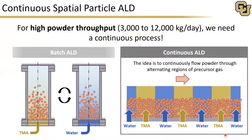In contrast to batch temporal ALD, where we load our powder into the chamber, perform a series of reactions, and then remove that powder, we can remove some of this dwell time by continuously flowing powder through alternating regions of precursor gas. This way, we can accomplish both half reactions simultaneously, just in different regions within the reactor itself.